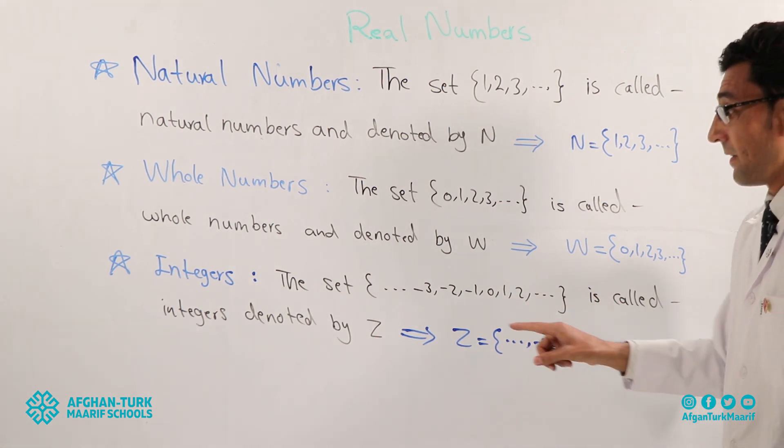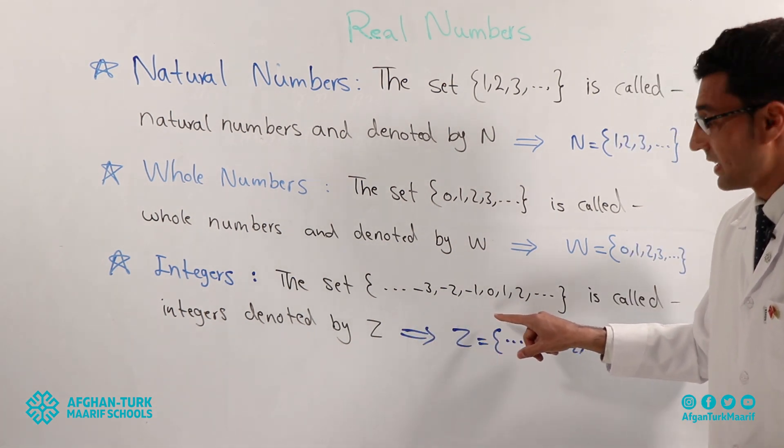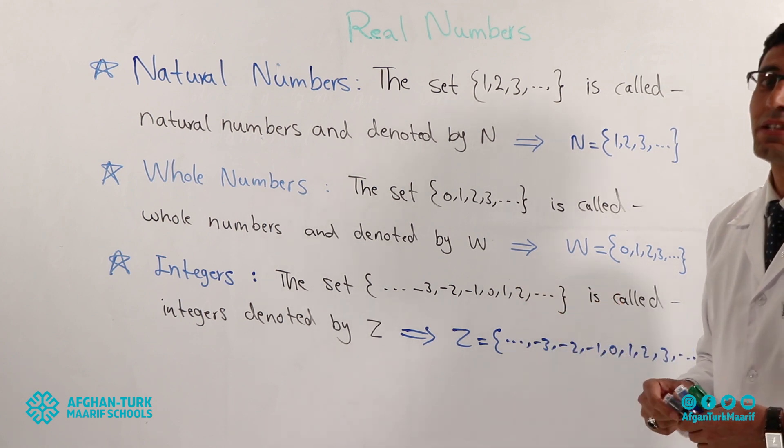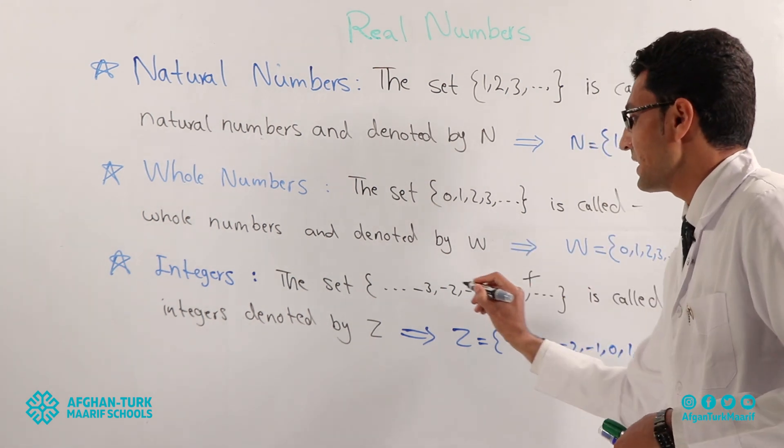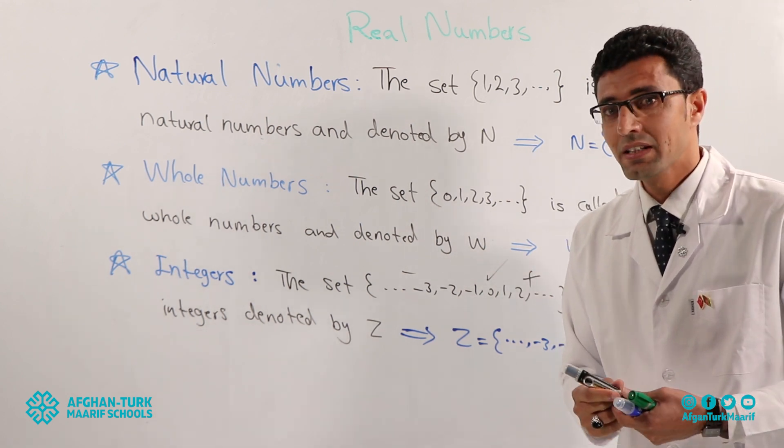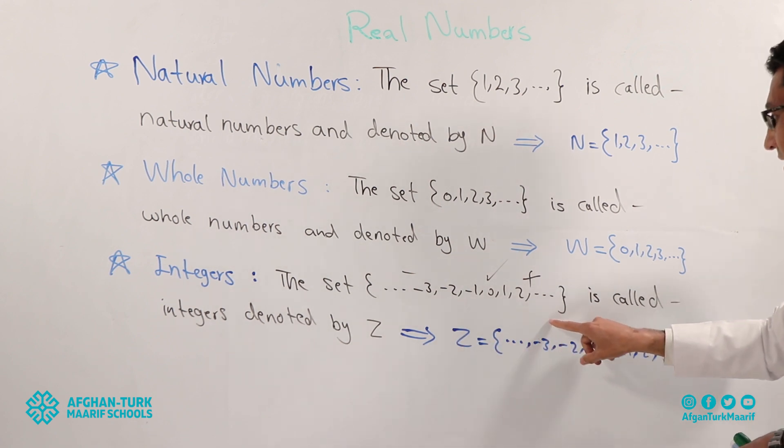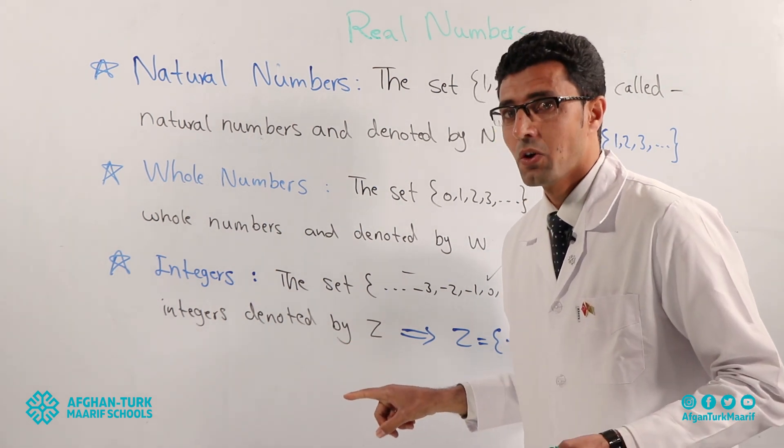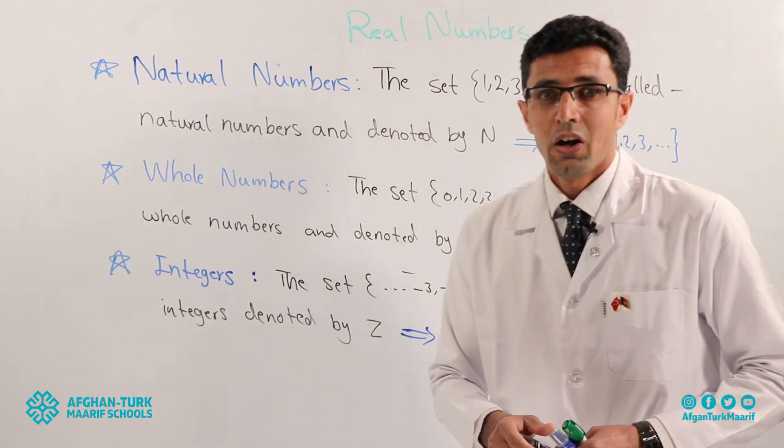And so on. It means what type of integers we have? Negative integers. Positive integers. So what is zero? Zero is not negative. And not positive. It means that we have positive integers and negative integers. But zero is not positive and negative. The set of these numbers is called integers. And denoted by Z or Z.